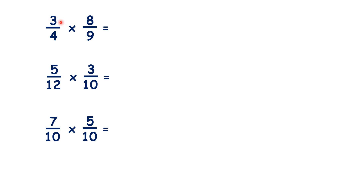So if we look at this first question, we might notice that 3 and 9 are both in the 3 times table. So if we divide them both by 3, 3 divided by 3 is 1, and 9 divided by 3 is 3. And what else might we notice for this first question?